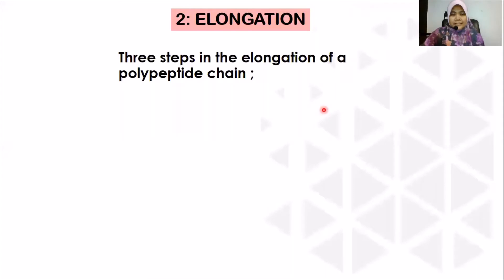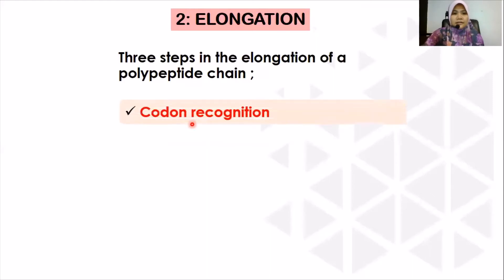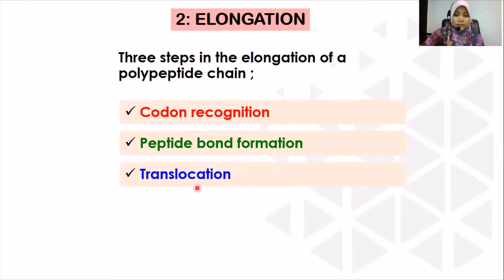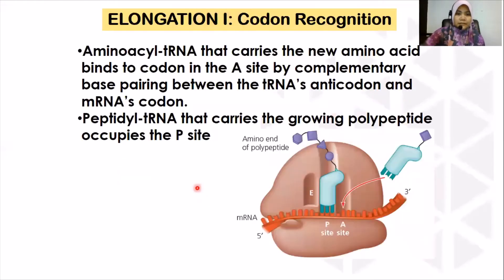The second stage in translation is elongation. In elongation, there are three steps. First step is codon recognition. Second step is peptide bond formation. And the third step is translocation. Let's look at the first step in elongation, which is codon recognition.